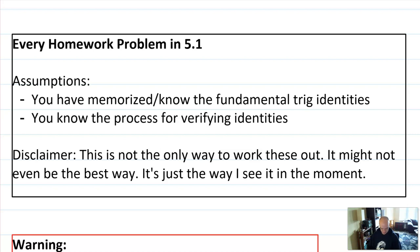So a couple of assumptions here. I'm going to go pretty fast through all the problems. I am assuming you've memorized the trig identities and you've watched the videos or you've seen the lesson about how to verify identities and you understand the process. I'm not going to go over any of that. This isn't the only way to work these out — it might not even be the best way. It's just the way that I happen to see it. You might even have a better way; if you do, go ahead and leave it in the comments below and we can all learn from it.